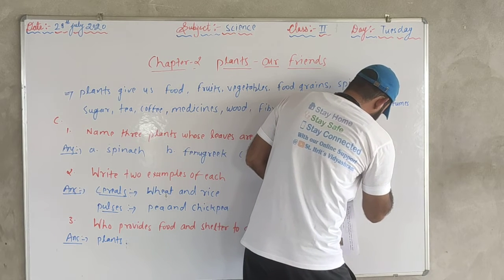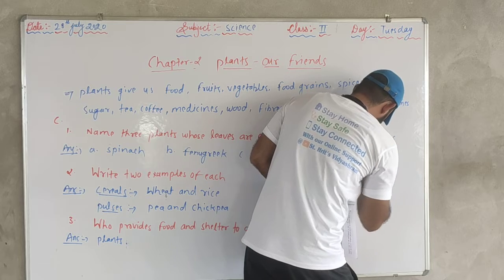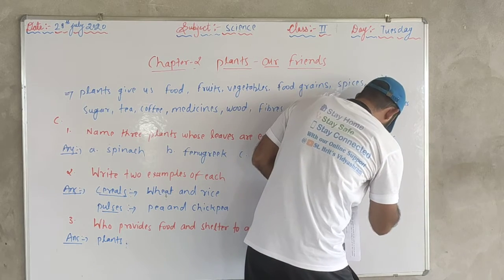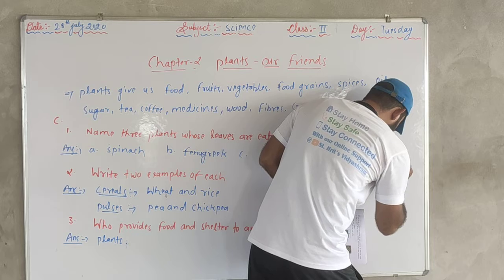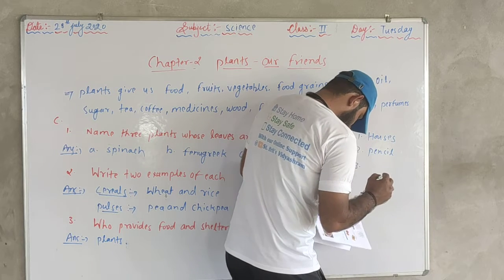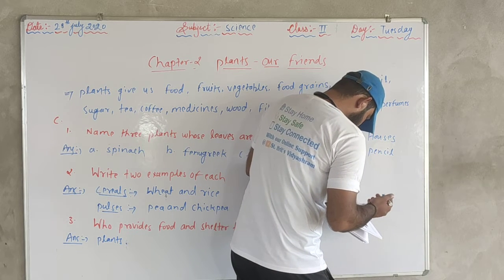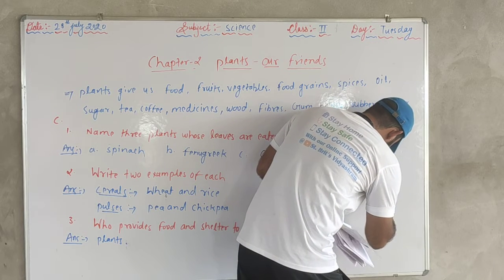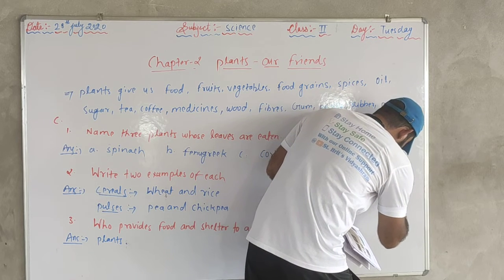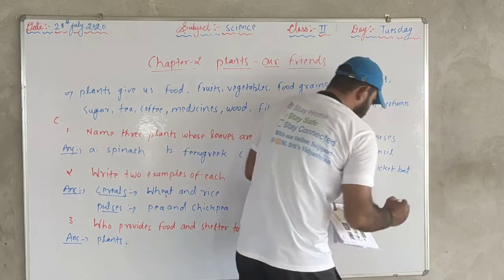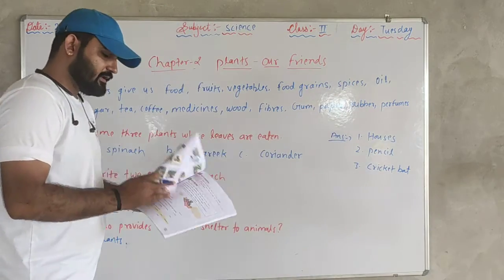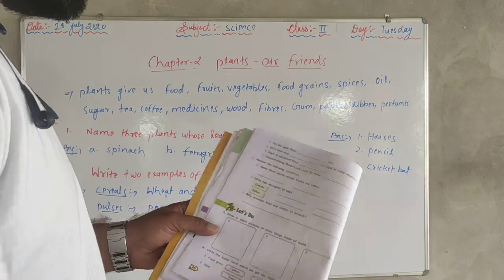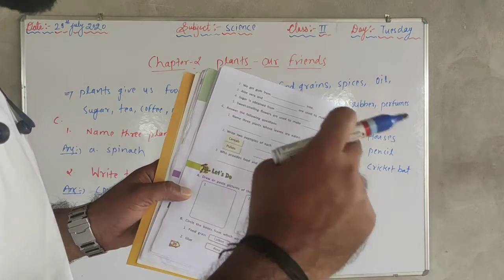First: houses. Second: furniture. Third: cricket bat or similar wooden item. This is the answer. We test it and note it down — first, second, third.